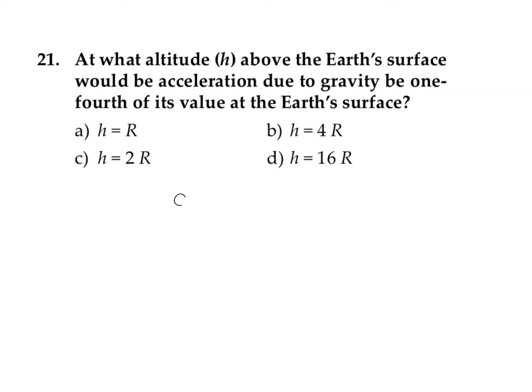We can use the equation for acceleration due to gravity at height h: g_h equals g0 divided by (1 plus h divided by R) whole square.